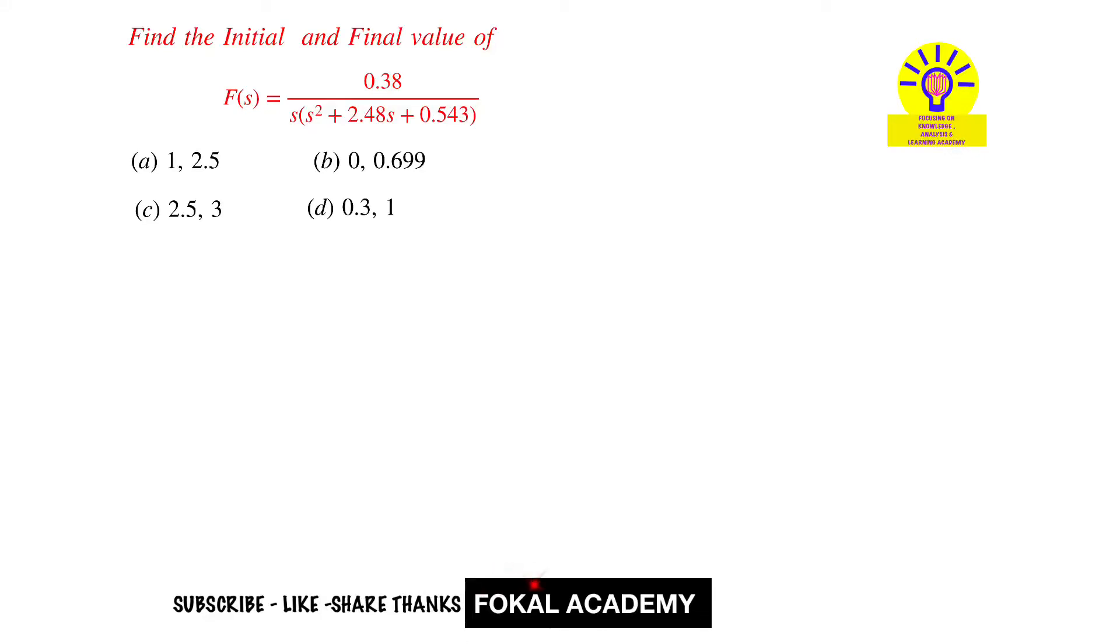Hi everyone, welcome to Fokal Academy. In this problem, we need to find the initial and final value for a function F(s) = 0.38 / (s(s² + 2.48s + 0.543)). So for this function F(s), how do we find the initial and final values? This is the problem.